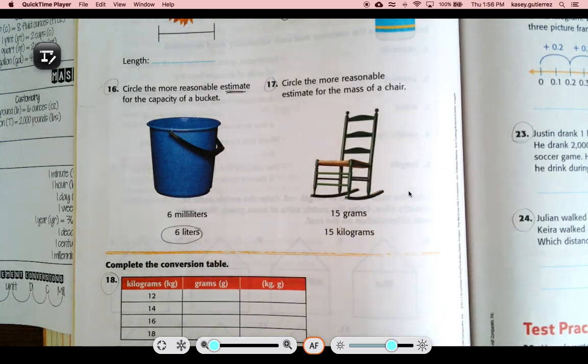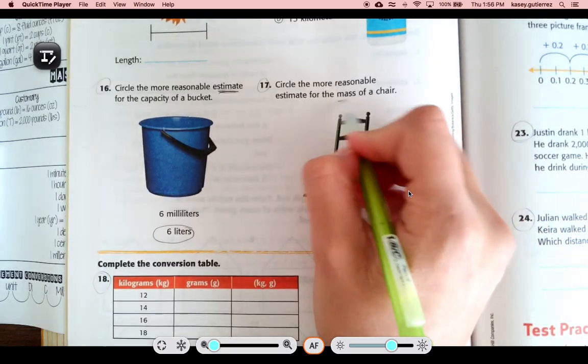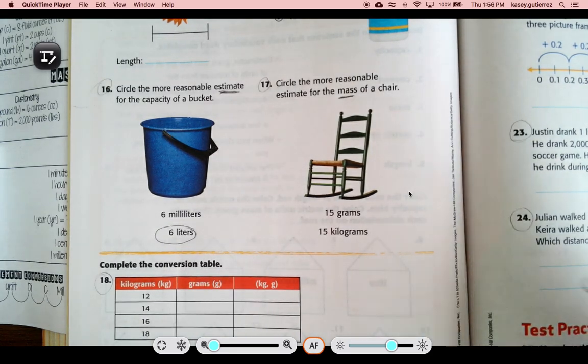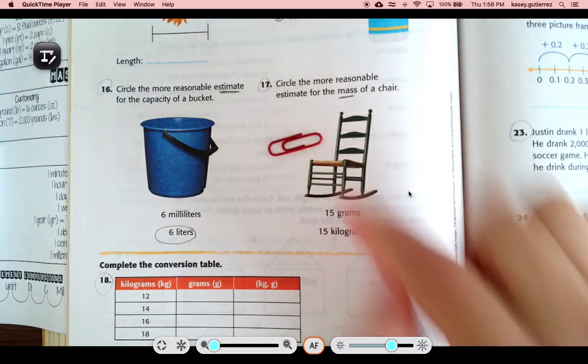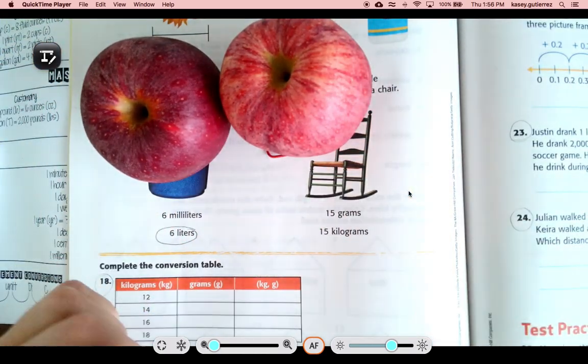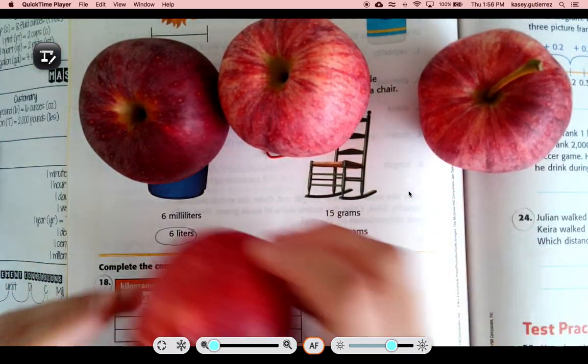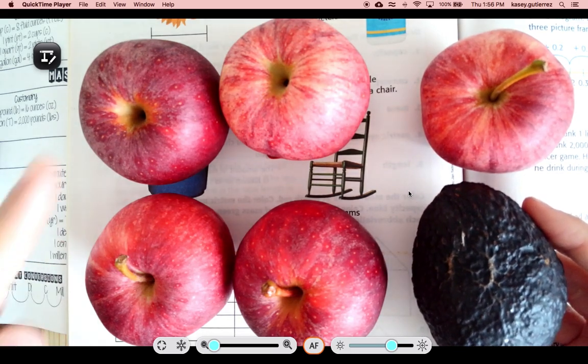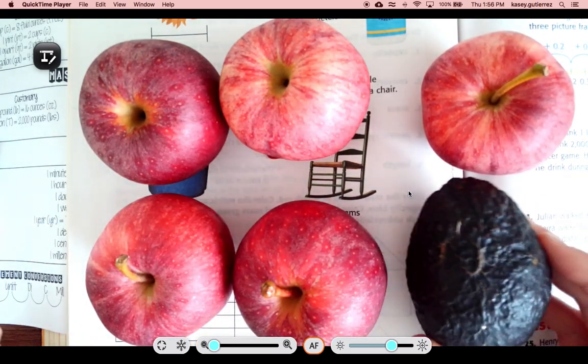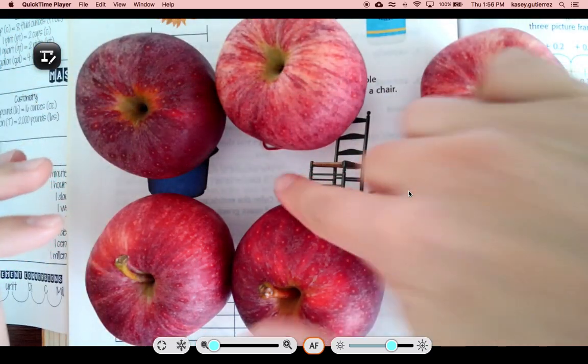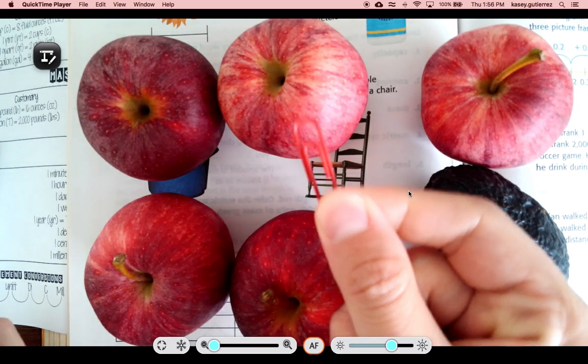Number 17, circle the more reasonable estimate for the mass of the chair. We measure mass in grams. So 1 gram, if we recall, is equal to 1 paper clip. That's 1 gram. And 1 kilogram is about the same weight as 1, 2, 3, 4, 5, and an avocado. Well, it's about 6 apples or maybe 5 apples and an avocado. So that's the weight of 1 kilogram.